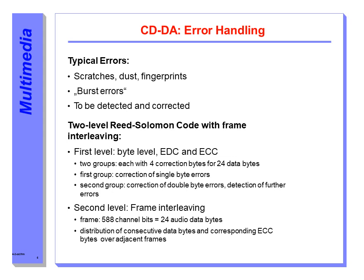Error handling is performed using two levels of Reed-Solomon coding with frame interleaving operations. In the first level of error handling, there are two stages: error detection and error correction. By taking help of the Reed-Solomon algorithm, for every 24 audio data bytes there are two groups of correction data bytes, each containing four bytes. The first group corrects single byte errors while the second group corrects double byte errors.